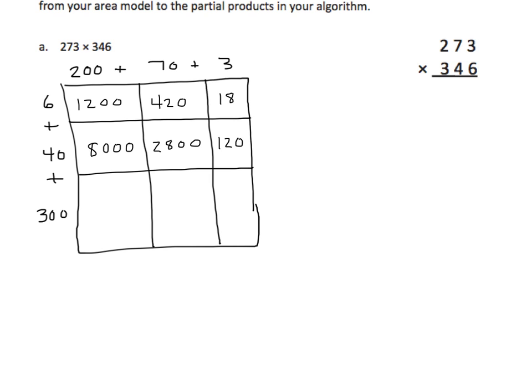Finishing up with the hundreds place, I have three hundreds times three ones, and I have three hundreds times seven tens, which gives me twenty-one thousand. And three hundreds times two hundreds is sixty ten-thousands. Let's find our partial products. You may want to draw these going vertically. If we're not so accustomed to working horizontally, there's no shame in rewriting these. I'm just a little short on space, so I'm going to continue by adding these rows.